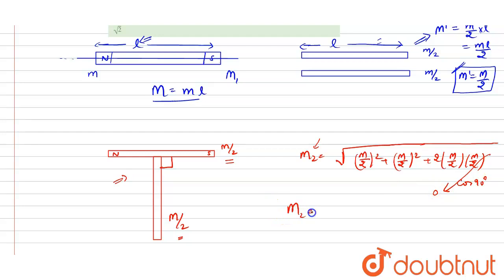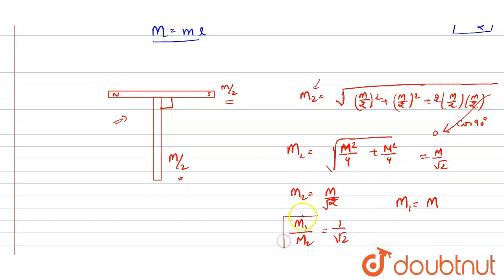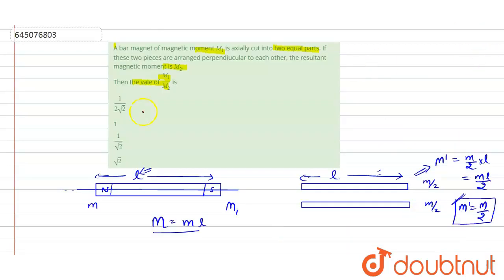Now M2 will be equal to √(M²/4 + M²/4), which gives √(M²/2), and this will be equal to M/√2. So M2 = M/√2, and we know that M1 = M. Therefore M1/M2 will be equal to 1/√2. So option C, which says M1 divided by M2 is 1/√2, is the correct answer for this question.